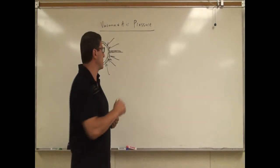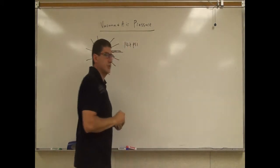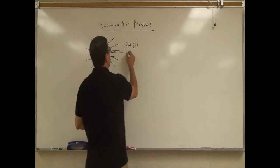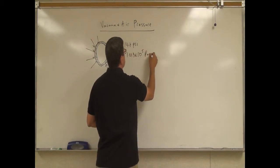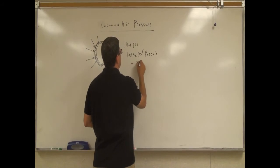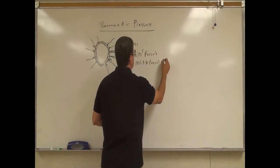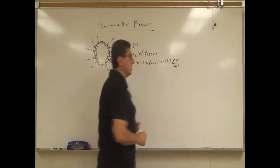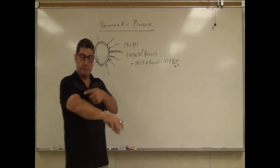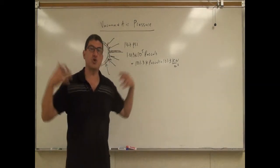On Earth, the atmospheric sea level pressure is 14.7 psi, pounds per square inch, or we say also 1.013 times 10 to the 5th pascals, which you can say 101.3 kilopascals, which is 101.3 kilonewton per meter squared. So every meter squared of our bodies has 101.3 kilonewtons of force pushing down on it.